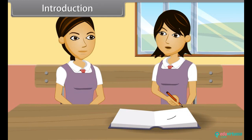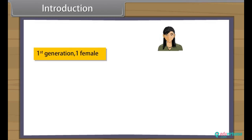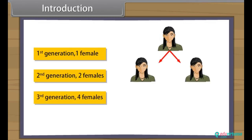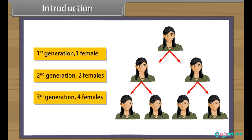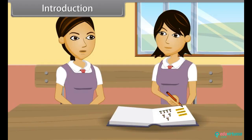Yes, it is possible, if the generation number is known. First generation: one female. Second generation: two females. Third generation: four females. Wow, that was so simple! Do you know what we call such progressions? No. Such a progression is a geometric progression. Come, I will tell you more about this.